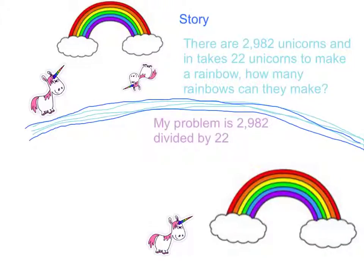This is my grouping example. My story is: there are 2,982 unicorns, and it takes 22 unicorns to make a rainbow. How many rainbows can they make?